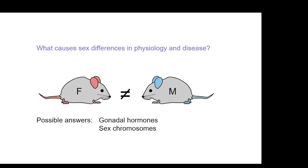There are two general answers in mammals to what kinds of factors cause sex differences. We'd like to develop a general theory of sexual differentiation — a whole list of all the things that are inherently different between males and females, so we can say, is this disease influenced by this sex-biasing factor or that one? There are two major classes of such factors: gonadal hormones and sex chromosomes.